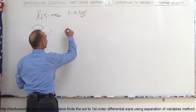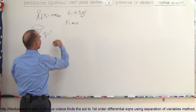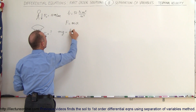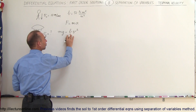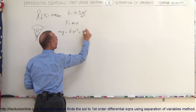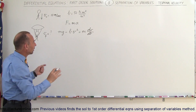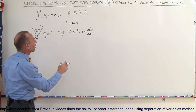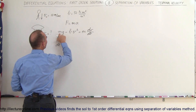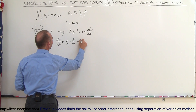Let's start with the equation F equals mA. The forces involved are the force of gravity, which is mg, minus the drag forces, which would be b times v squared. Notice that the drag forces are proportional to the velocity squared. That equals m times dv/dt, because we want an equation that relates velocity to time. Dividing both sides by m, we end up with dv/dt equals g minus b over m times v squared.